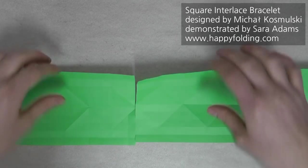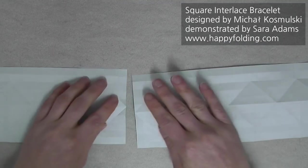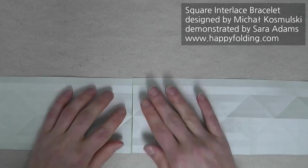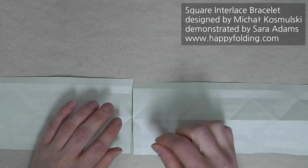And I'm going to tape, and I don't want this to be visible in the finished model, so I'm going to tape it on the white side, and just have a little overlap to the colored side, which is folded underneath.